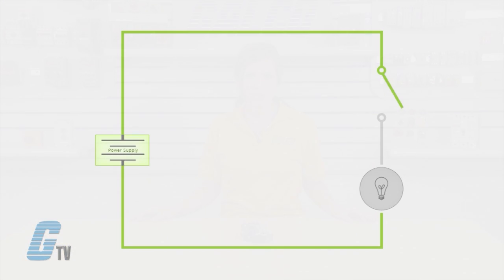Here is an electrical diagram of a switch. When the switch is open, the circuit is open or off. When the switch is closed, the circuit is closed or on.